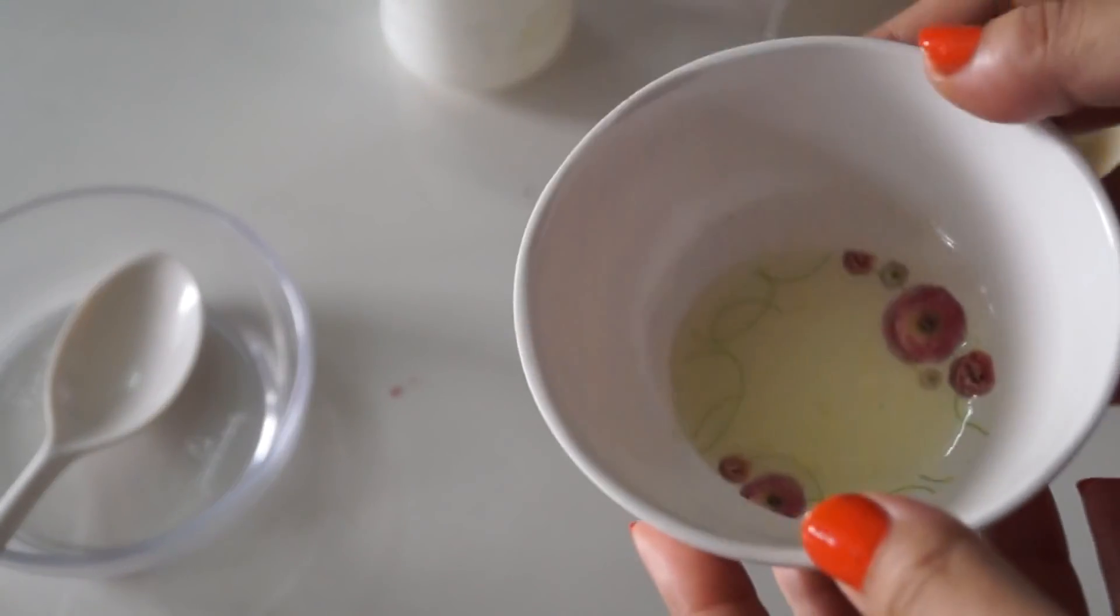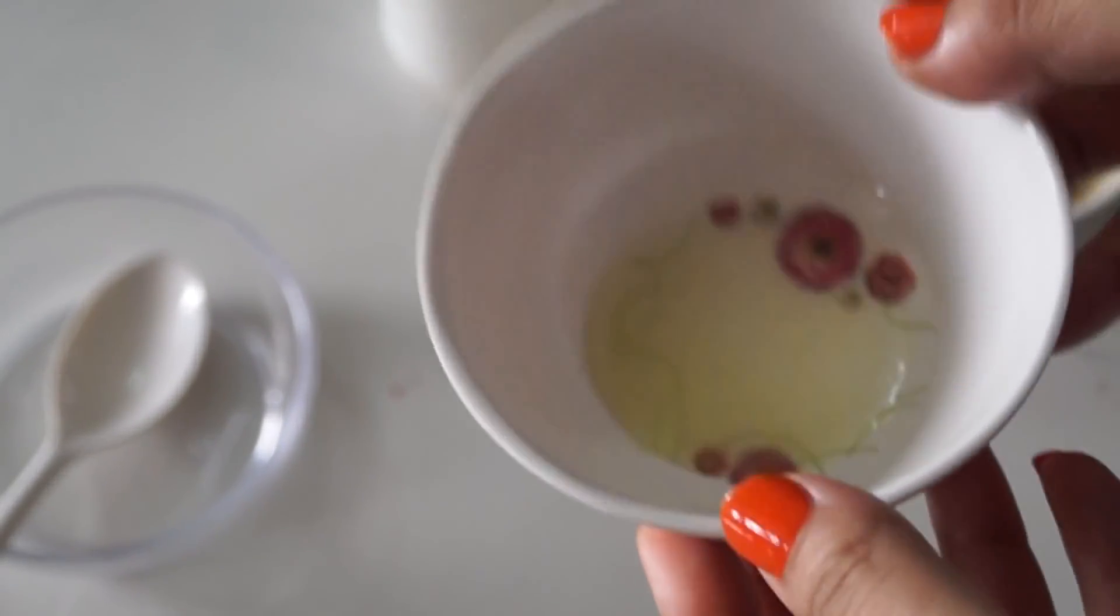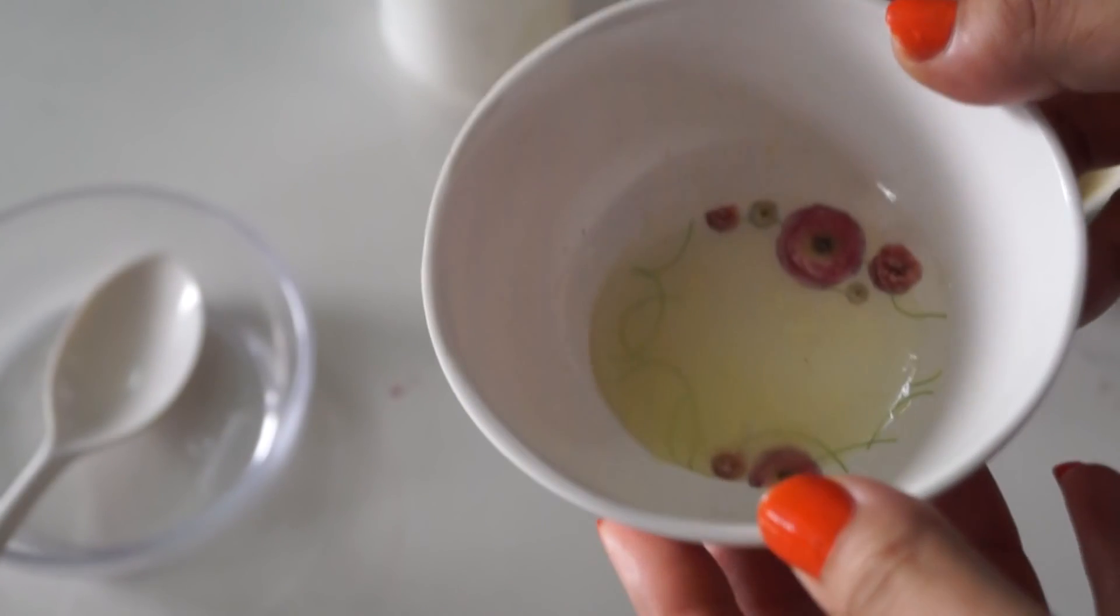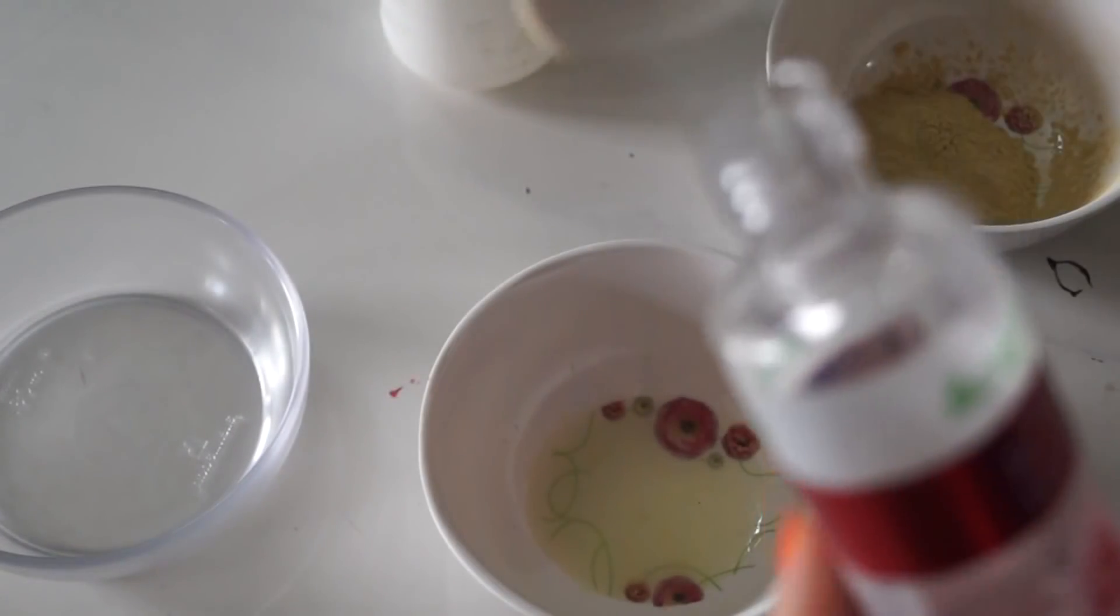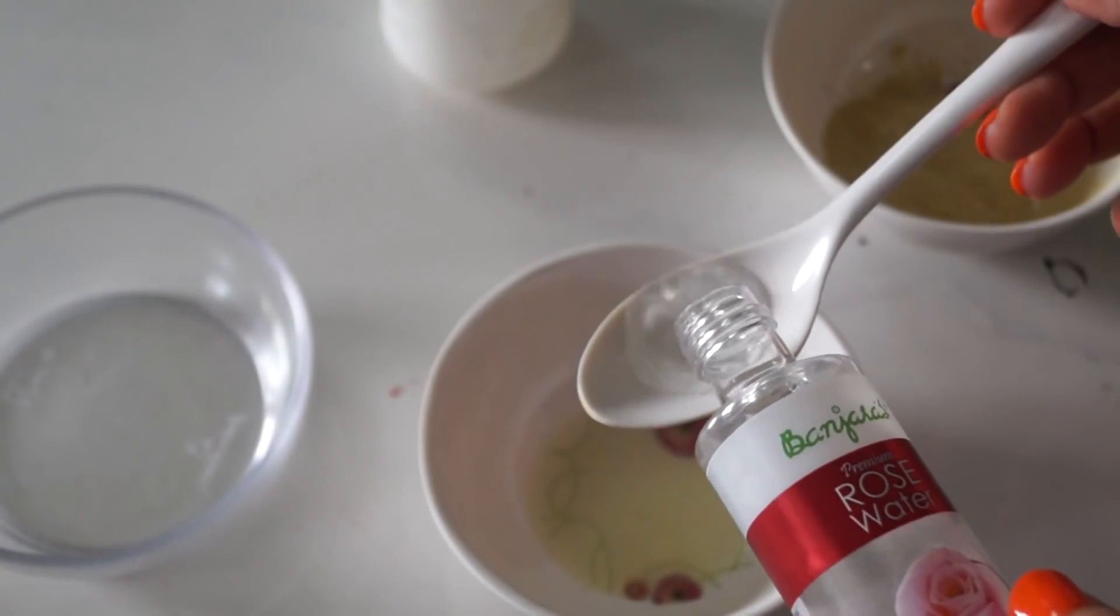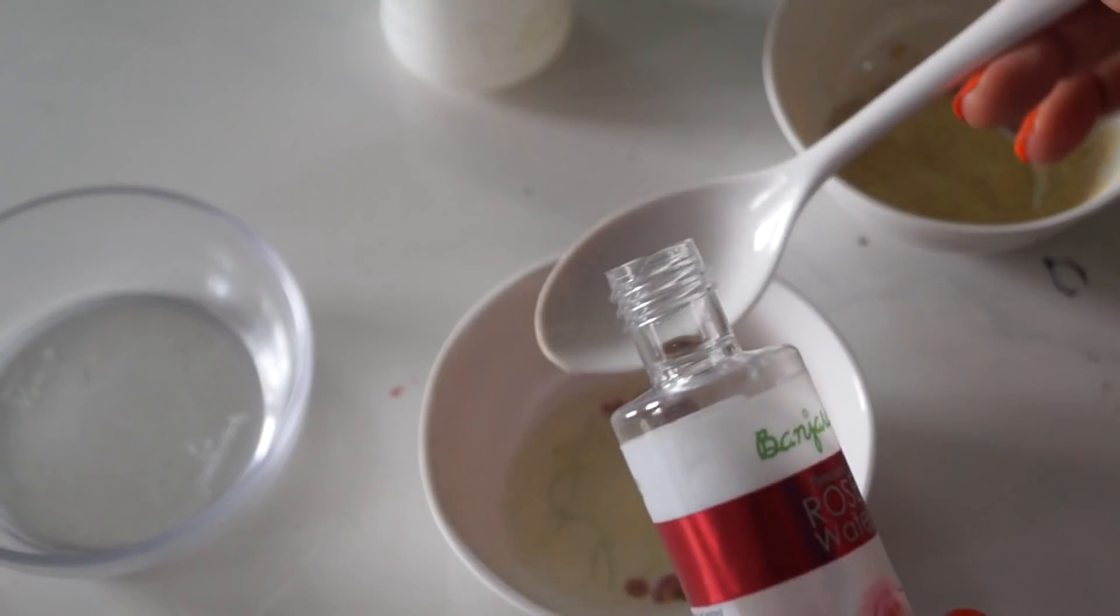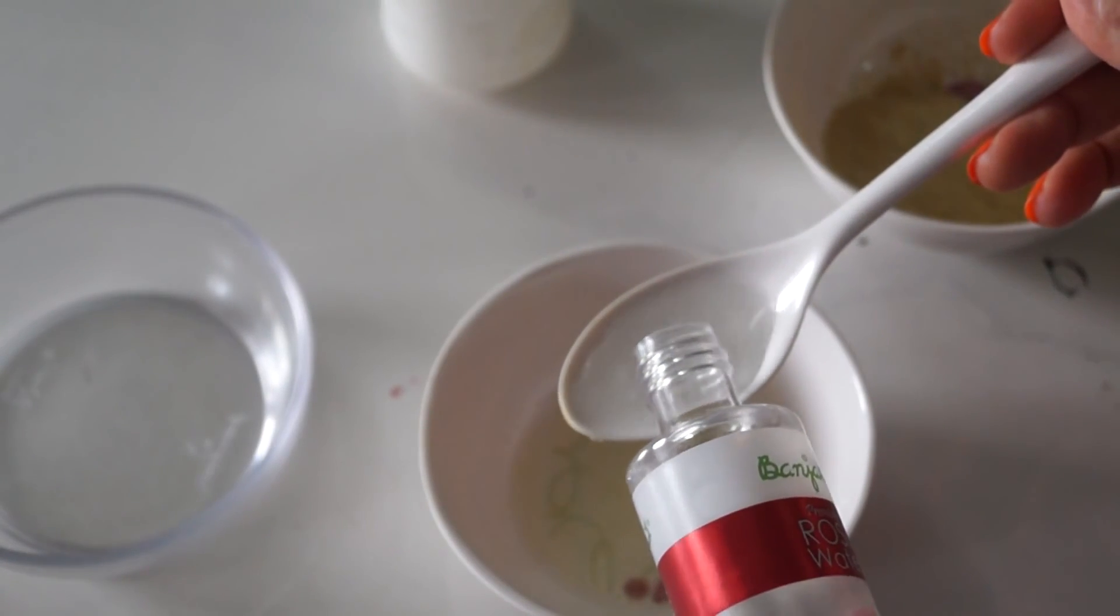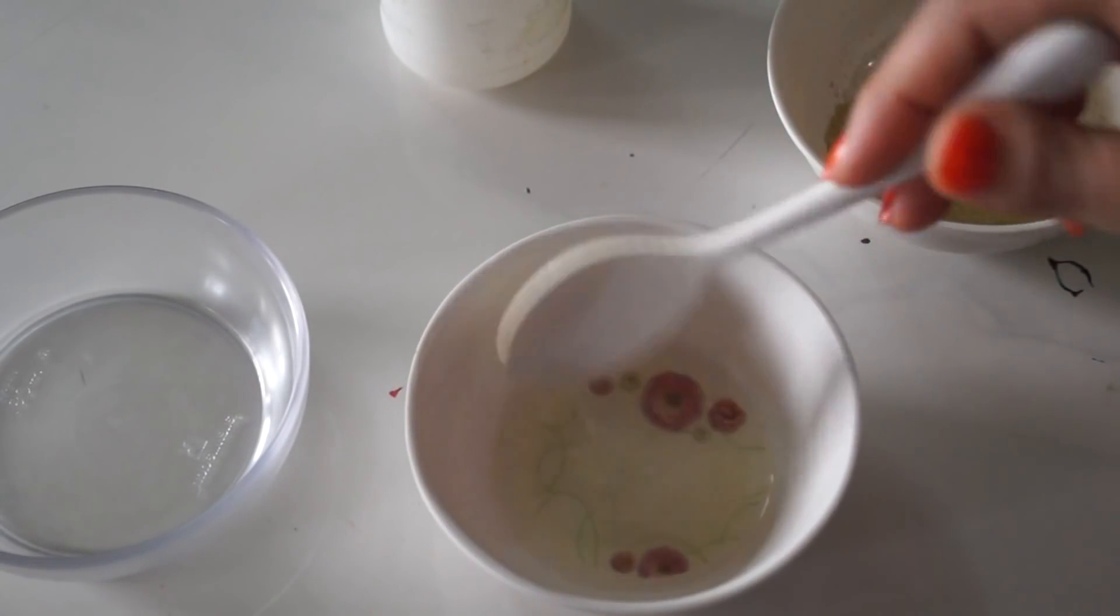So first ingredient that you need is the lemon juice. As you can see I have one tablespoon of freshly squeezed lemon juice. Then I am going to add rose water. So I am going to add around three tablespoons of rose water, combine the rose water with lemon juice.